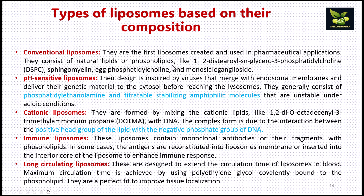Conventional liposomes are basically made up of natural phospholipids such as sphingomyelin, egg phosphatidylcholine, and monosialoganglioside. pH-sensitive liposomes are designed — inspired by viruses that merge with endosomal membranes to deliver genetic material to the cytosol before reaching lysosomes. They consist of phosphatidylethanolamine and titratable stabilizing amphiphilic molecules that are stable at physiological pH but unstable under acidic conditions, causing them to rupture and release the drug in the acidic environment.